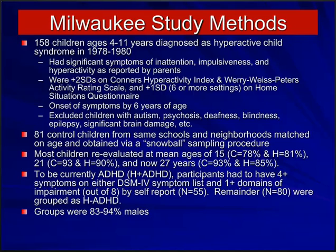Beginning in 1978, I began evaluating 158 children between 4 and 11 years of age who at that time were diagnosed as having a hyperactive child syndrome, but who today would be called ADHD combined type. These children were diagnosed by research criteria because there were no DSM criteria at the time that could be used in research projects. DSM-2 did exist, but it was not especially precise. So we selected children who had significant symptoms of inattention, impulsiveness, and hyperactivity, much as would be required today in the DSM-4 criteria.